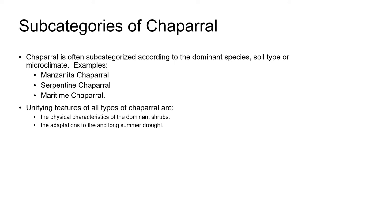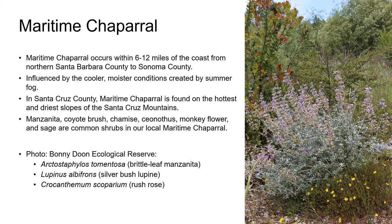Chaparral is often sub-categorized according to the dominant plant species, soil type, or microclimate. Examples include Manzanita chaparral, Serpentine chaparral, and Maritime chaparral. The unifying features across these different types are the physical characteristics of the dominant shrubs and their adaptations to fire and long summer drought.